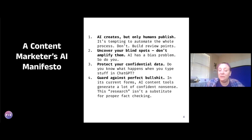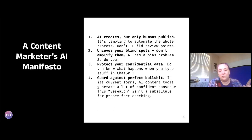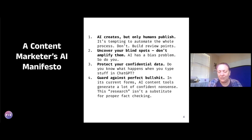Guard against what I call — in the classic philosophical sense, the Harry Frankfurt sense — perfect bullshit. I keep this book on my desk at all times. Some of you know I used to be a journalist. A lot of AI content will generate very smooth, confident nonsense. Even if you ask it to do research for you, that is not a substitute for good fact-checking. That is not a substitute for basic plagiarism checking. Use your human intuition on top of this. There are no shortcuts here. If you haven't read 'On Bullshit,' I highly recommend it.